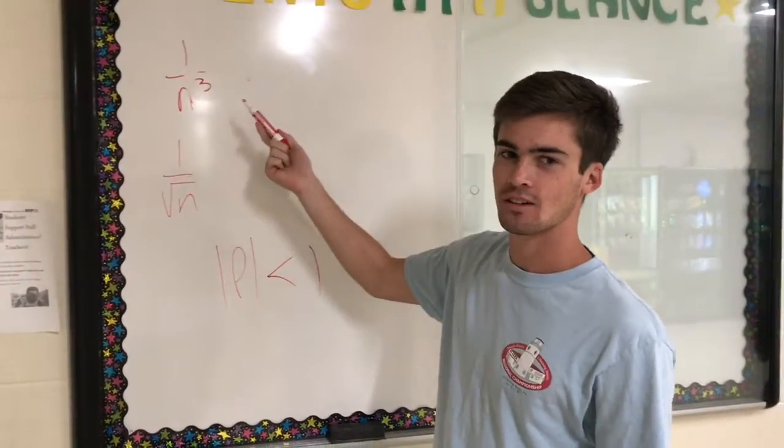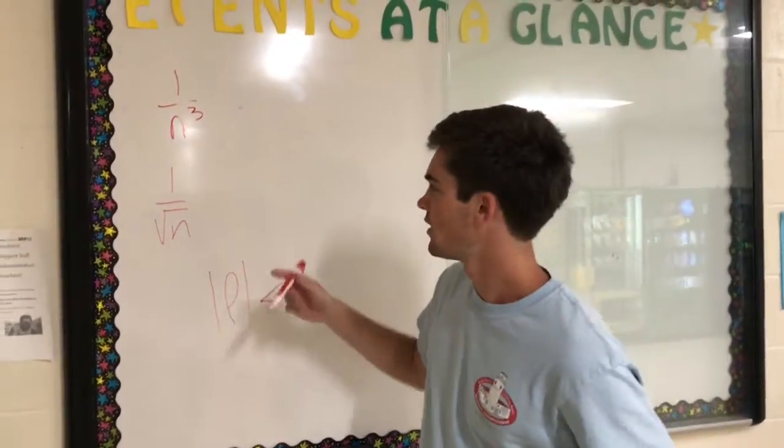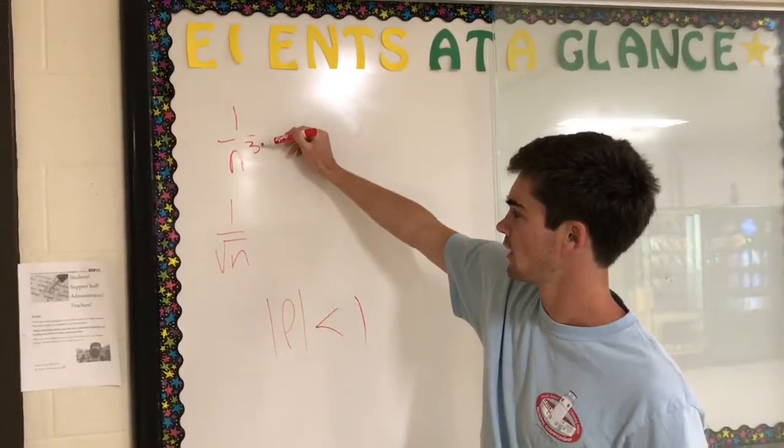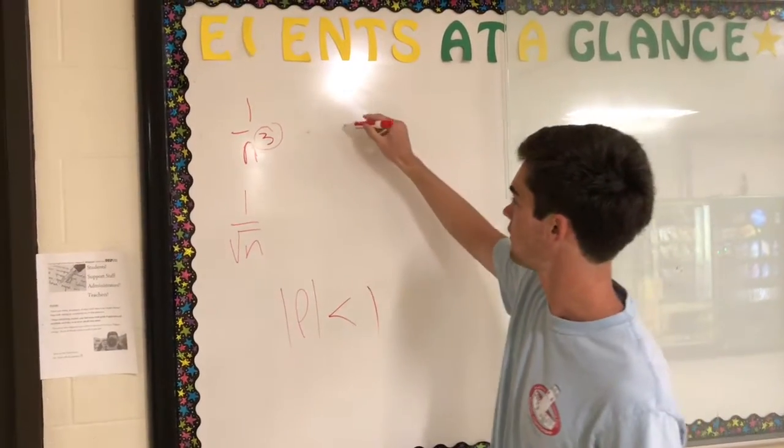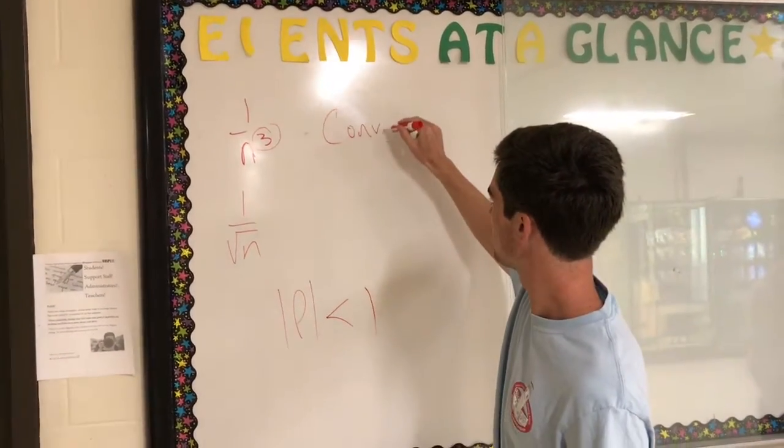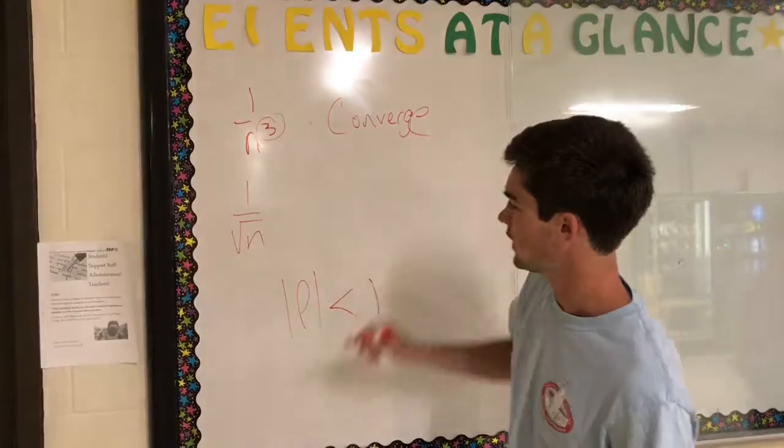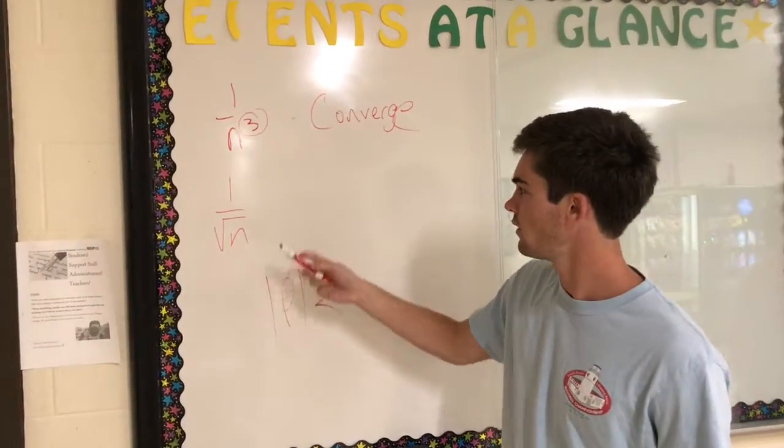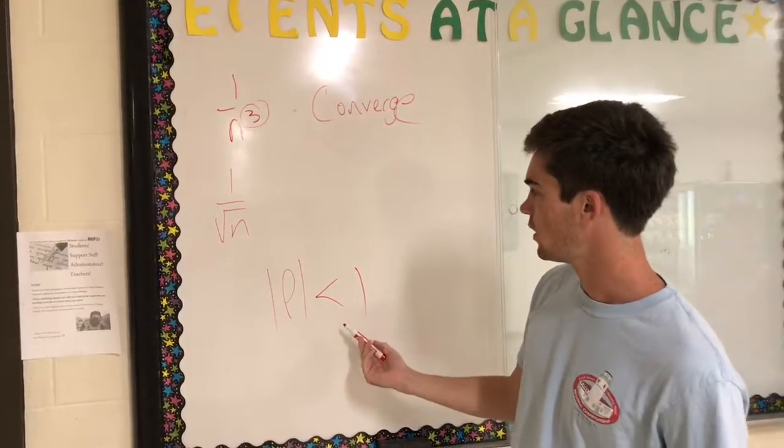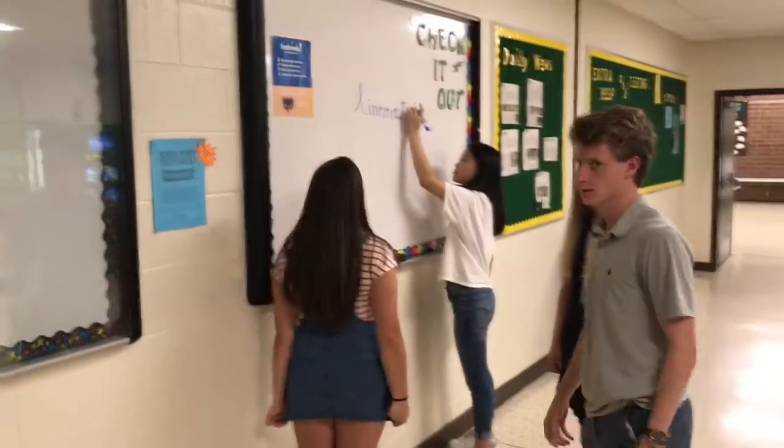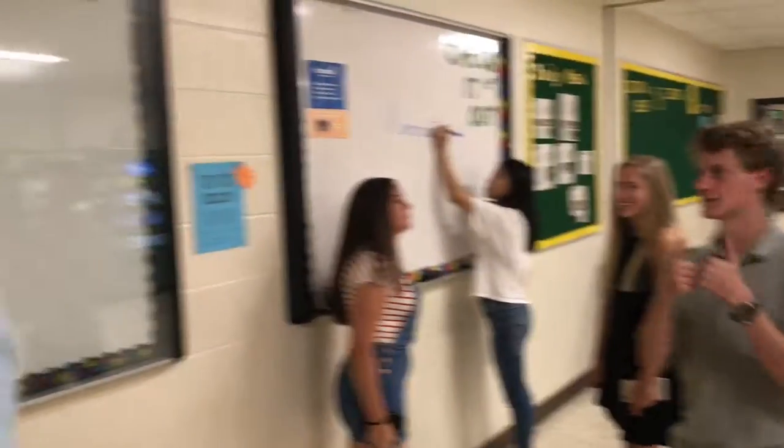Alright, so these are P series. They're pretty easy. What you've got to look at is this number right here. So if this number is greater than 1, it's going to converge. And then if you look at this one, the exponent would be 1 half, so that's less than 1, and so it's going to diverge. And that's P series.